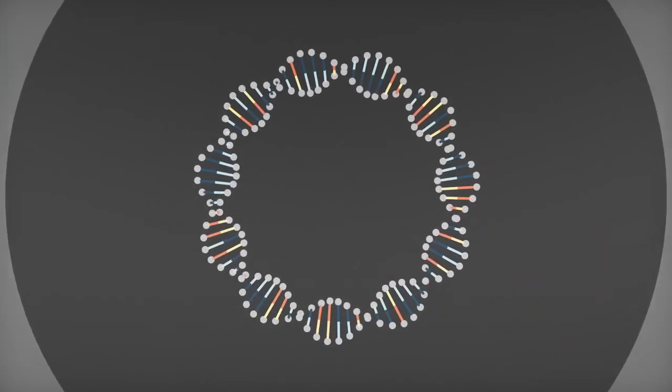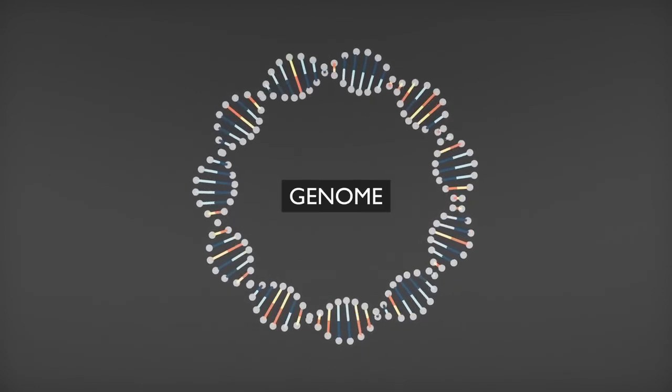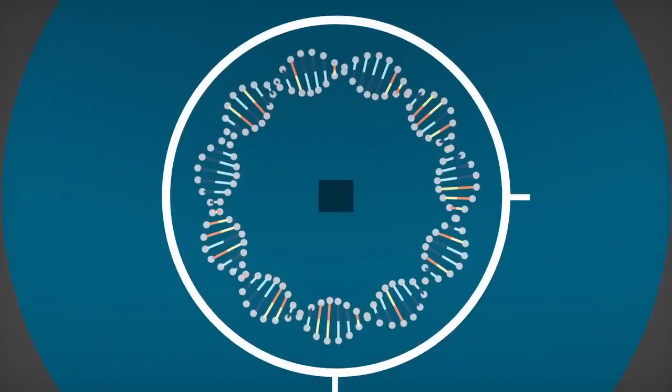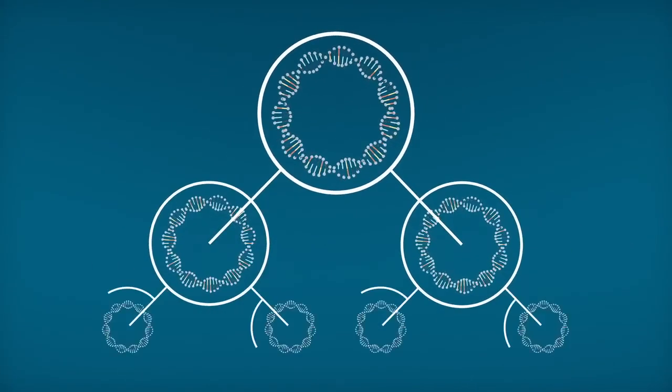The complete set of instructions encoded in an organism's DNA is called its genome and is passed from parent to offspring during reproduction.